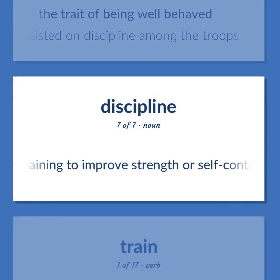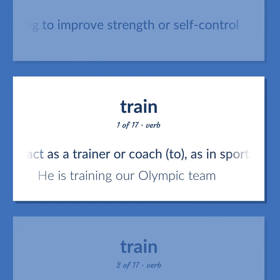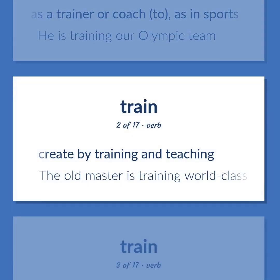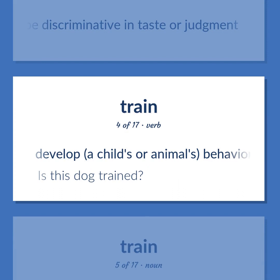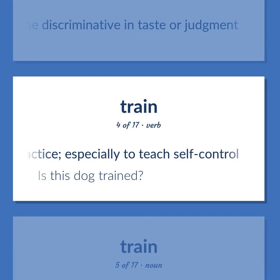Train: training to improve strength or self-control. Teach and supervise someone; act as a trainer or coach, as in sports — 'He is training our Olympic team.' Create by training and teaching — 'The old master is training world-class violinists.' Teach or refine to be discriminative in taste or judgment. Develop a child's or animal's behavior by instruction and practice, especially to teach self-control — 'Is this dog trained?'